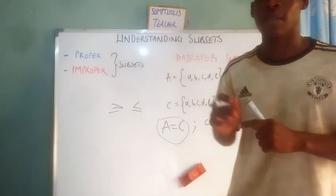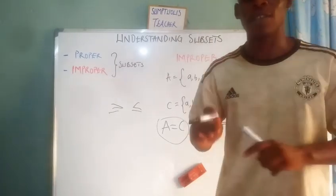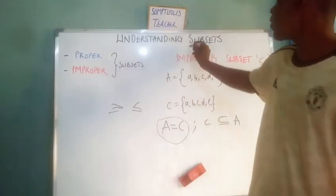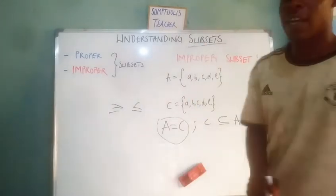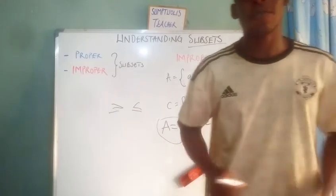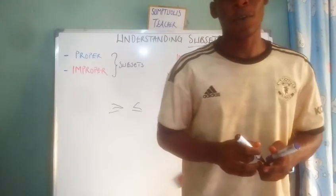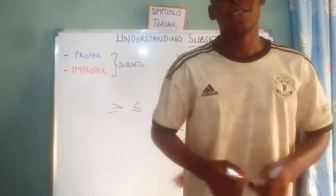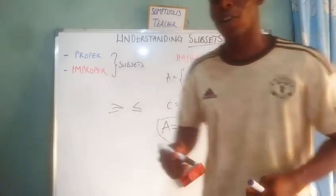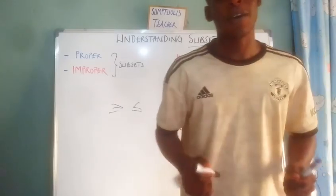A proper subset is when one set has only some elements of another set. Thanks for watching — I hope you now understand subsets, including proper and improper subsets. Please subscribe to the channel if you haven't, and leave your comments and questions. Bye for now.